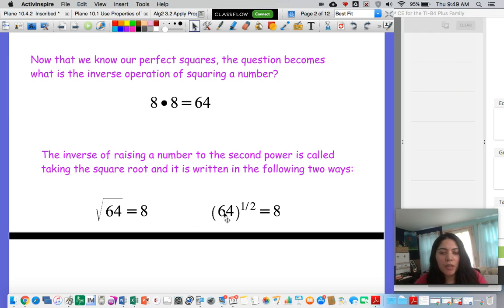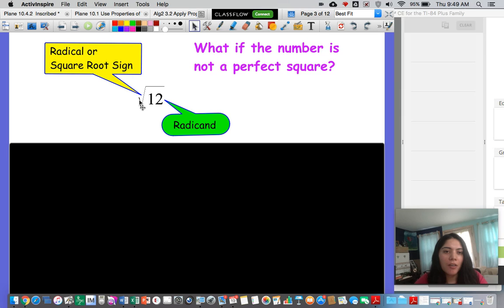Another way to write the square root of a number is raising the number, the radicand, this value in here is called the radicand, raising that radicand to a power of one half. Okay, so so far we have learned that this is called the radical sign, the number or the value that goes inside of the radical sign is called the radicand.